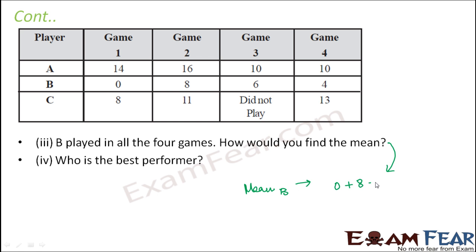Which is 0 plus 8 plus 6 plus 4, and how many games did he play? He played 4 games. So here in this case you can see the difference. In case of B, he played game 1 but scored 0, so we counted this as a number of games. But in case of C, he did not play game 3, so that was not counted.